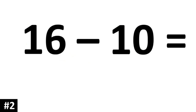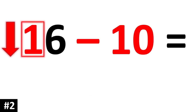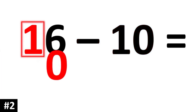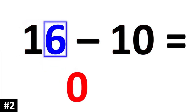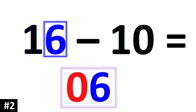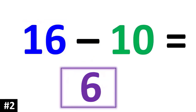Next example: 16 minus 10. Subtracting by 10 means the tens digit of 16 is going to go down by 1. So that 1 is going to go down to 0. The ones digit stays the same, so we bring down the 6. So 16 minus 10 is 6.